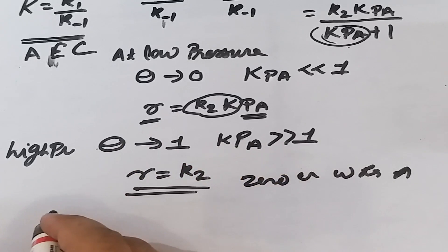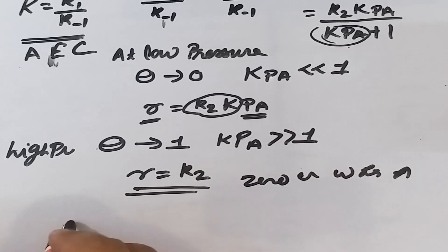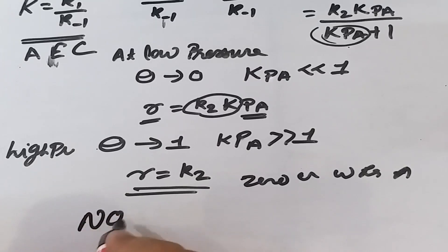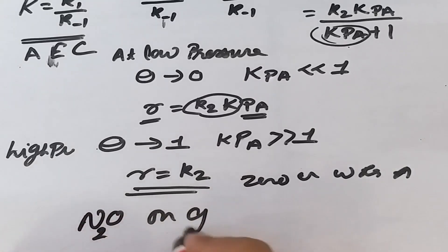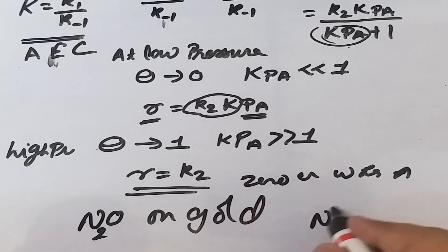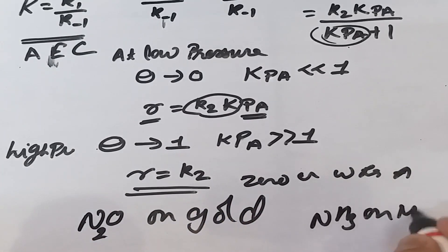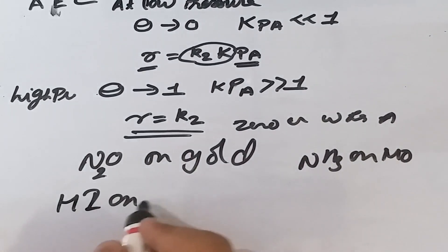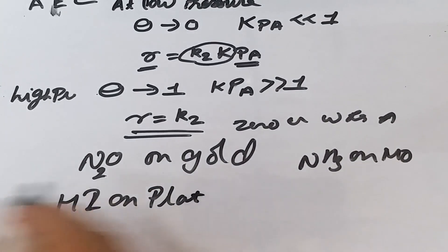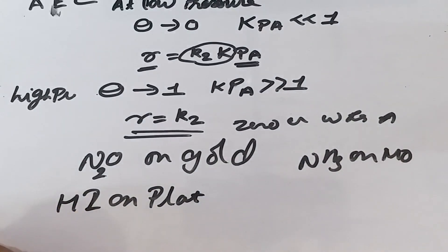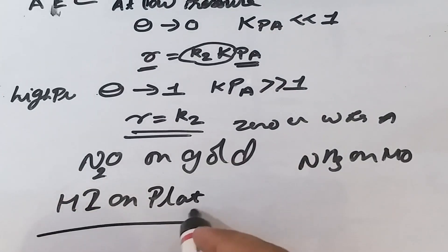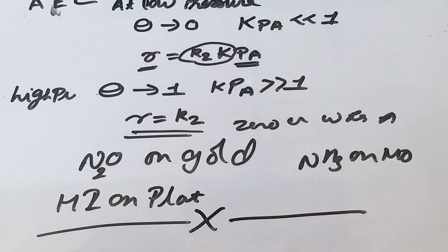Some typical examples of unimolecular surface reactions are: decomposition of N₂O on gold, decomposition of ammonia on molybdenum, and decomposition of hydrogen iodide (HI) on a titanium surface. This concludes the derivation and explanation of kinetics of unimolecular heterogeneous catalytic reactions.